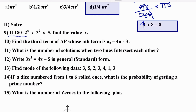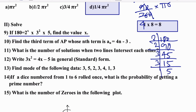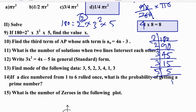If 180 is written as 2^x × 3² × 5, find the value of x. We factorize 180: 180 = 2 × 2 × 3 × 3 × 5 = 2² × 3² × 5. Comparing, x = 2 is the right answer.